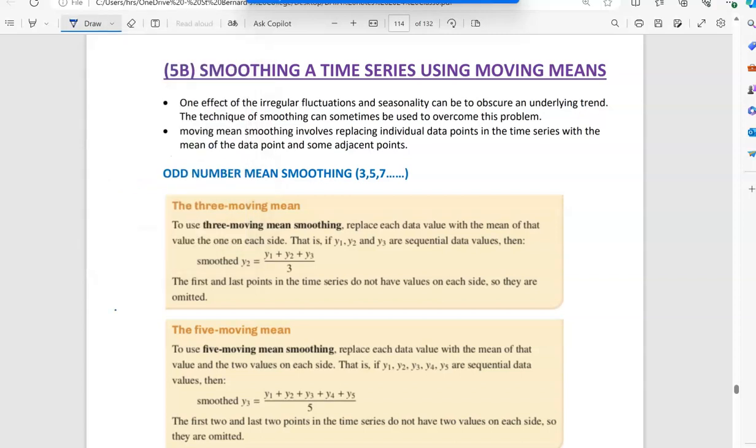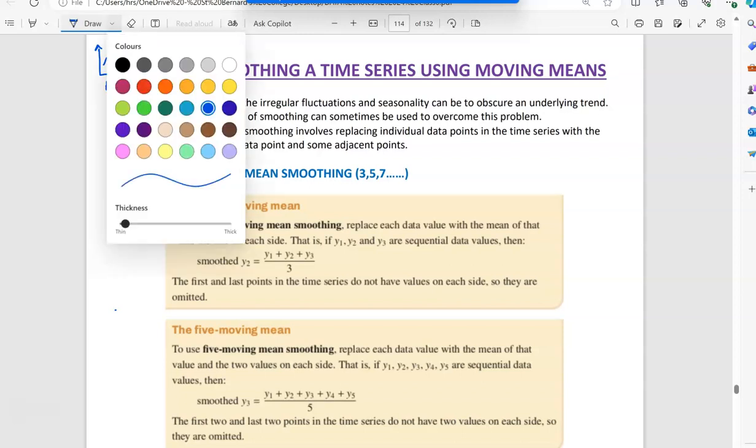All right, so yesterday we started looking at time series. When we saw it, we had these time series where EV ended up being time, and they might have patterns. Sometimes we see seasonality or a general upward trend, but we also saw random fluctuation.